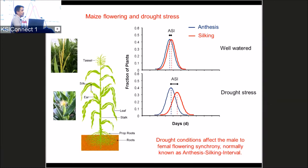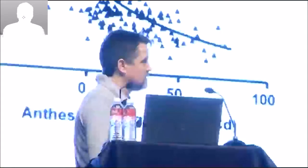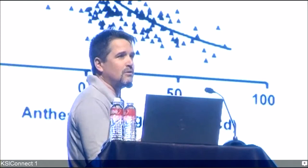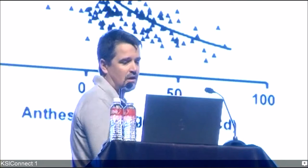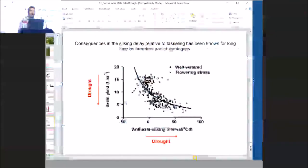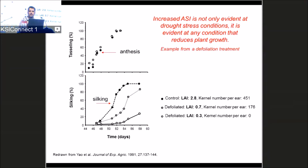We have also learned that if you throw fresh pollen onto those late-appearing female flowers, they will not produce a kernel. Breeders have known this for a long time: whenever the female flowering is delayed relative to male flowering, they also observe a yield reduction. This is shown in data from Pioneer breeding trials. Importantly, we see delayed silking under any condition that reduces plant growth — defoliation, reduced nitrogen, or reduced radiation.